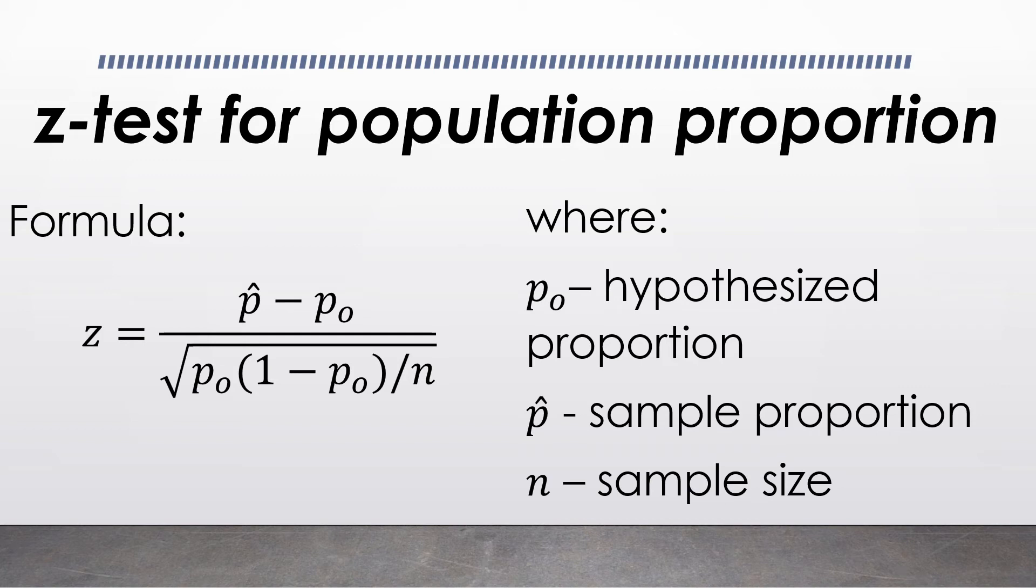Here we have p-hat as the sample proportion, p₀ is the hypothesized proportion, and n is the sample size.